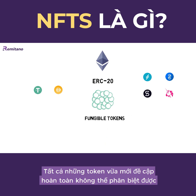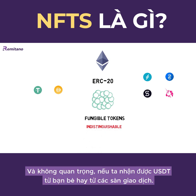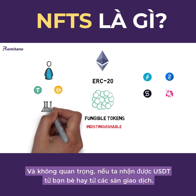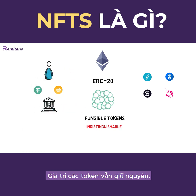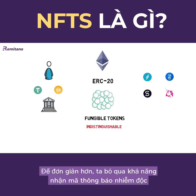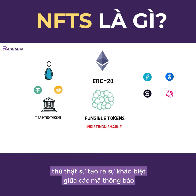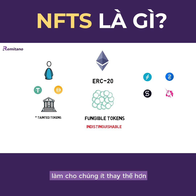So all of the tokens just mentioned are completely indistinguishable, and it doesn't matter if we receive USDT from our friend or from one of the exchanges — the value of each token is still the same. To simplify this explanation, we are skipping the possibility of receiving tainted tokens that would actually make a difference between tokens, making them less fungible.